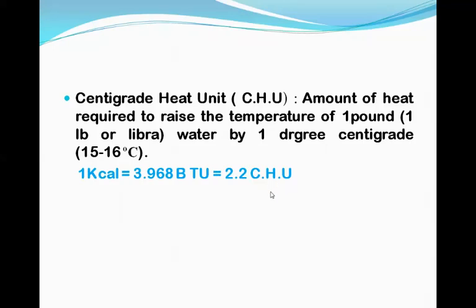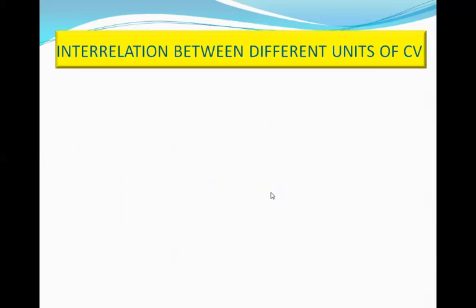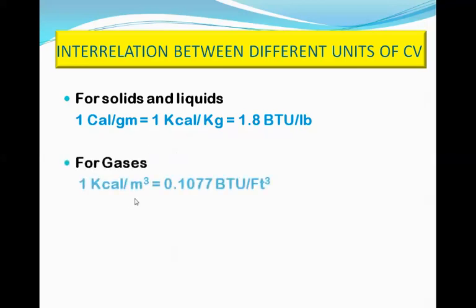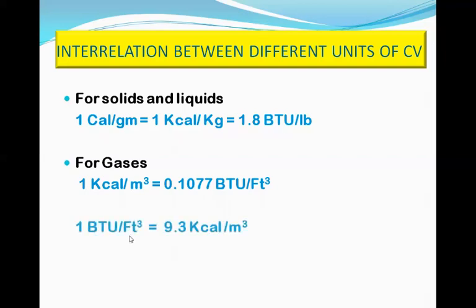The heat given per unit volume or per unit mass is known as calorific value, and there exists a relationship between the different units of calorific value. For solids and liquids, since calorific value is expressed per unit mass: 1 calorie/gram = 1 kilocalorie/kg = 1.8 BTU/lb. For gaseous fuels, since it is per unit volume: 1 kilocalorie/m³ = 0.1077 BTU/cubic feet, and 1 BTU/cubic feet = 9.3 kilocalorie/m³.